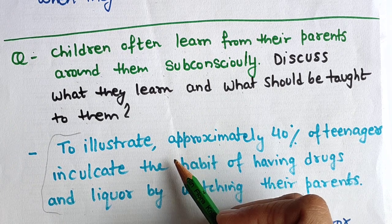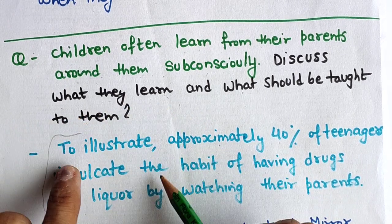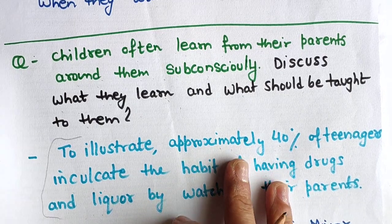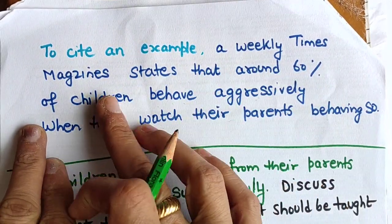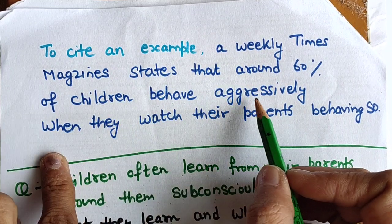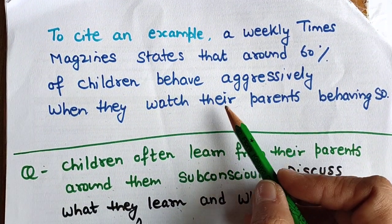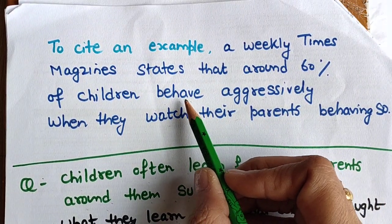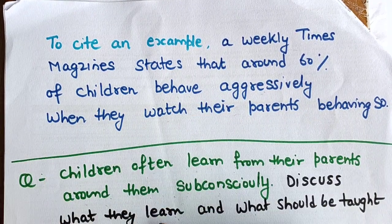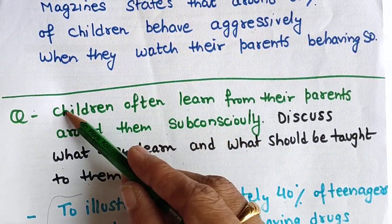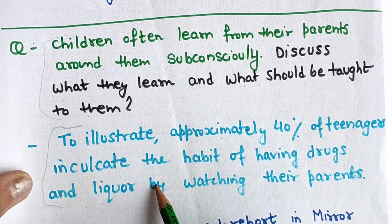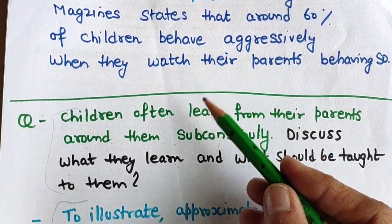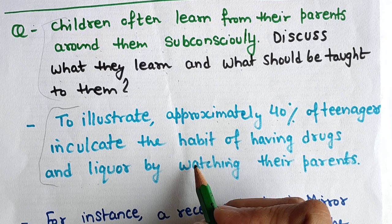...inculcate the habit of having drugs and liquor by watching their parents.' You can use this in body one or two depending on the point you are explaining. You could also use: 'To cite an example, a weekly Times magazine states that around 60 percent of children behave aggressively when they watch their parents' behavior.' However, do not use survey-style examples in both body one and body two — use it in only one paragraph.